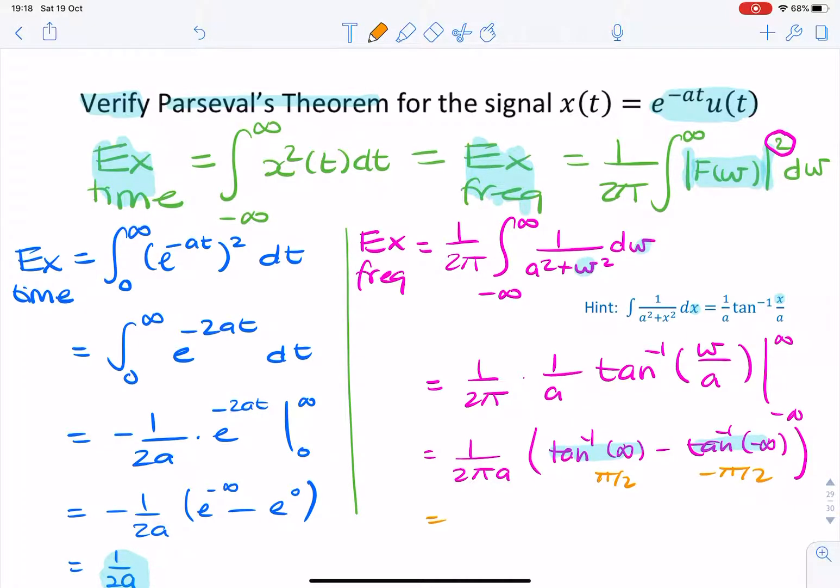That will give you pi over 2 pi a. And if you simplify that,